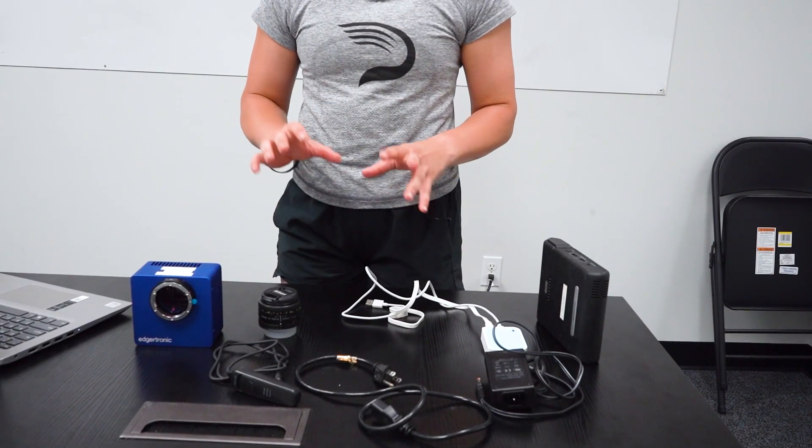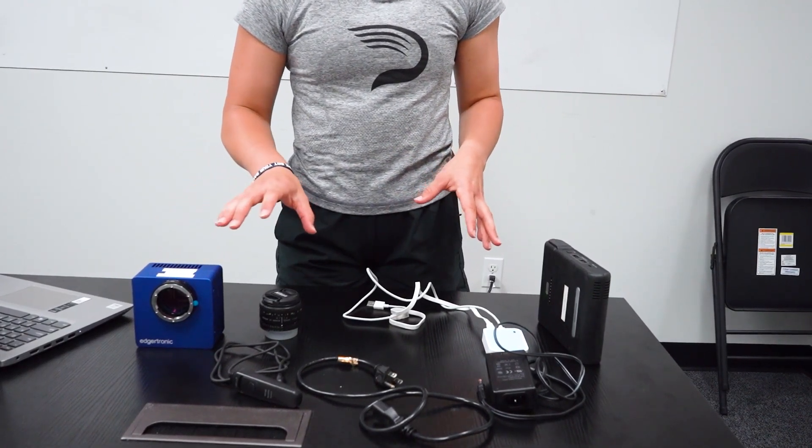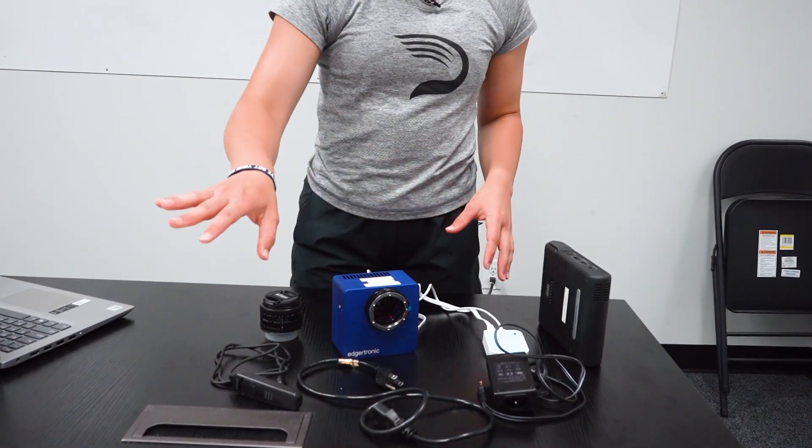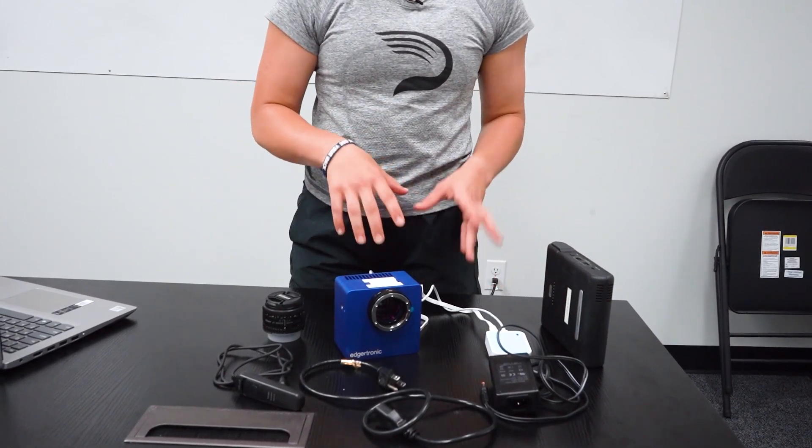So now I'm going to be taking us through the Edgertronic setup. I've actually taken away the Ethernet cable and I'm going to be using the TP-Link, which is a nano router.